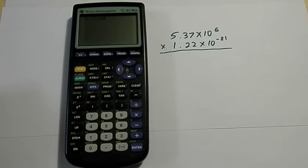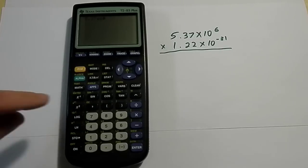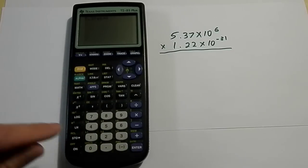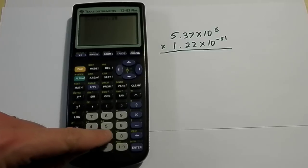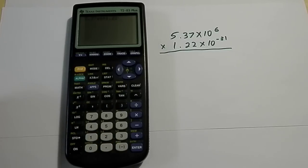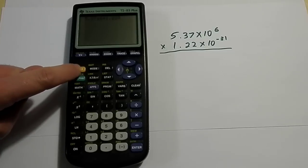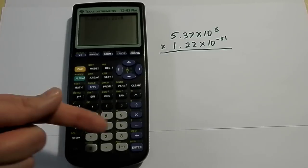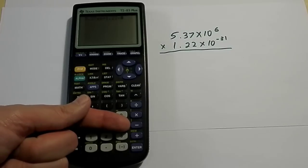Now I want to multiply this by 1.22 times 10 to the negative 31. So I get to hit the multiplication button for the first time because I am truly multiplying some numbers. I type in the 1.22 and now again to type in the scientific notation, I hit second function and the EE button. Now here's the part we got to be careful about. This number is times 10 to the negative 31. And quite often I'll see people hit this button in order to make it a negative value.